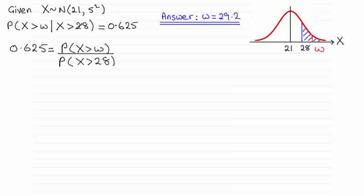So what I need to do is rearrange this for the probability of x is greater than w. So I've just got to multiply by the probability of x is greater than 28 to both sides. So therefore I've got the probability of x being greater than w is going to be equal to 0.625 multiplied by the probability of x being greater than 28.